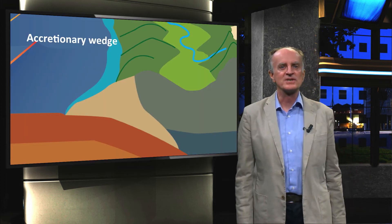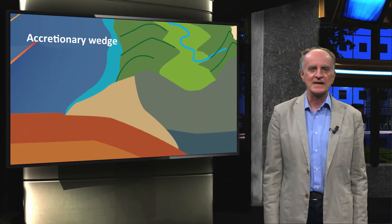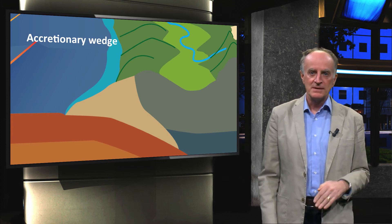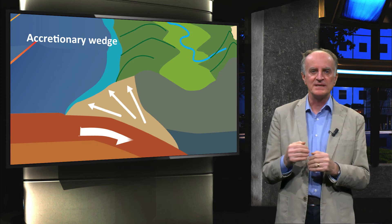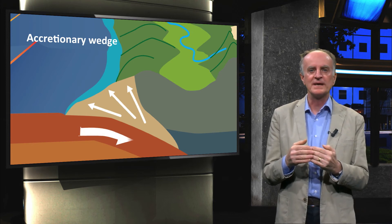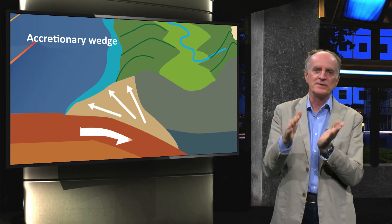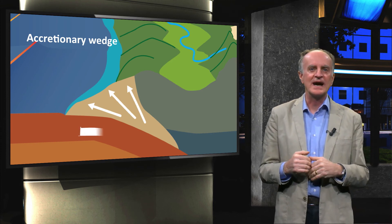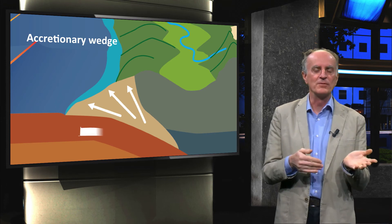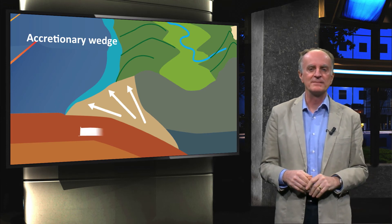The third major feature associated with subduction zones are accretionary wedges. Because of the friction between the subducting and the upper plate, sediments and other rocks of the lower plate are scraped off and accreted to the upper plate. Not surprisingly, rocks in the accretion wedges are highly deformed, and they form the initial stages of mountain building.